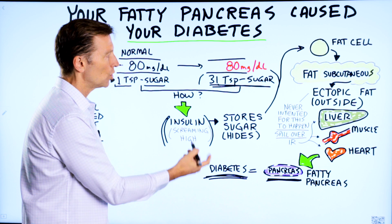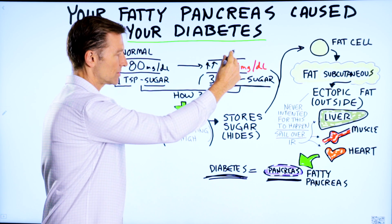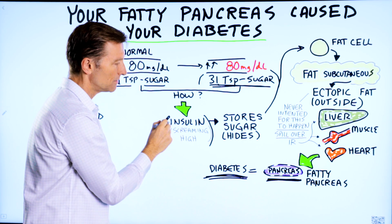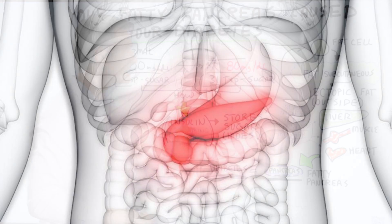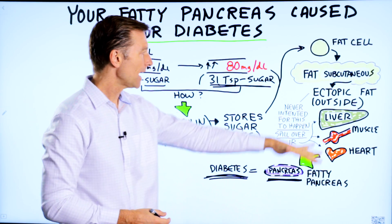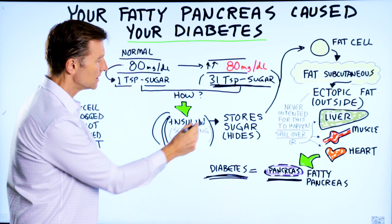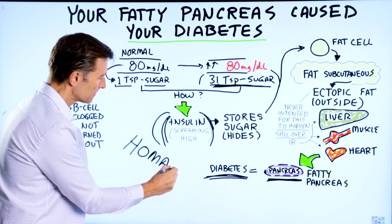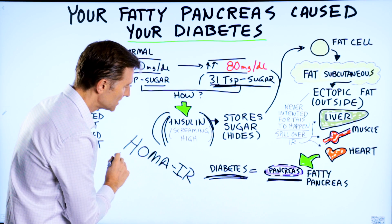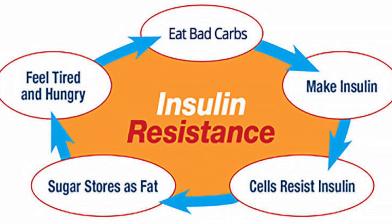Diabetes is a state where blood sugars start to go too high — it's out-of-control blood sugars. Why? Because you lose insulin function. Why? Because your pancreas is clogged up with fat. This is the entire cascade that happens when you continue to eat too much sugar and insulin stays too high. Your doctor would have caught it earlier if they had done a fasting insulin test, or a test called HOMA-IR — which measures both fasting insulin and your glucose to assess insulin resistance.